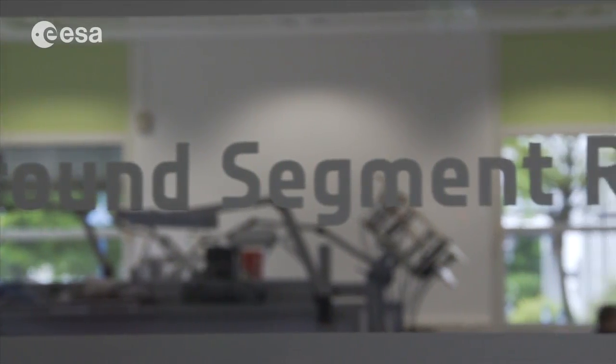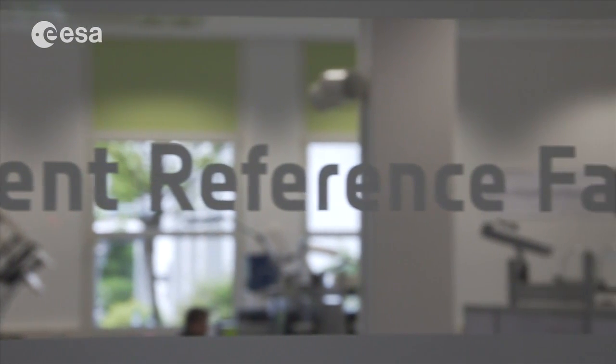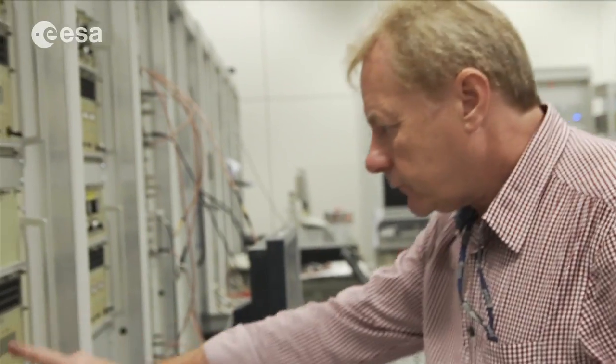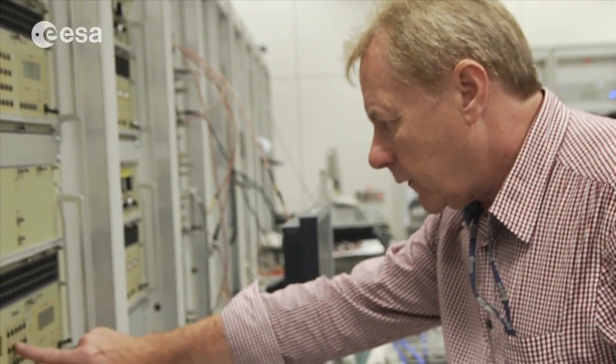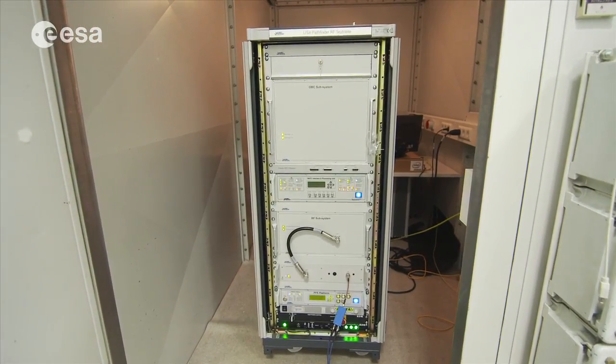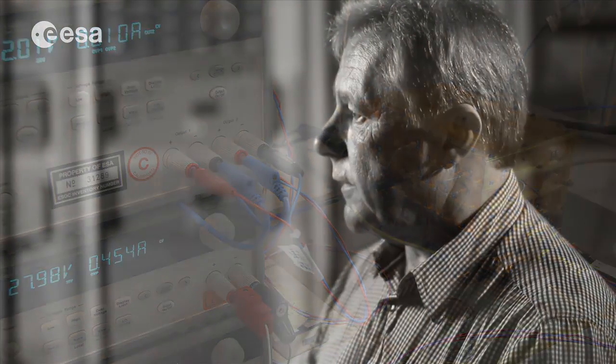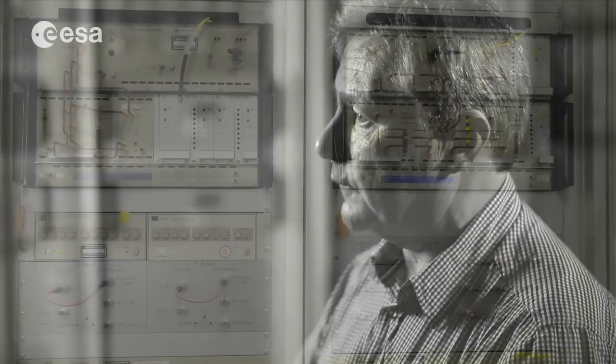Here we have a ground segment reference facility which we use to replicate the same configuration that we have in our deep space network. In addition, we have a Faraday cage which we use to mount the flying transponder and onboard data handling system which we use to make representative compatibility testing for the flying missions.